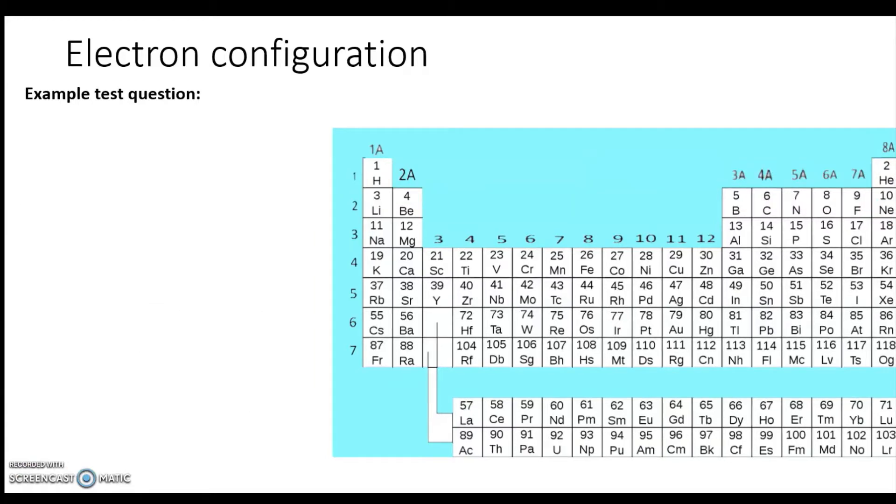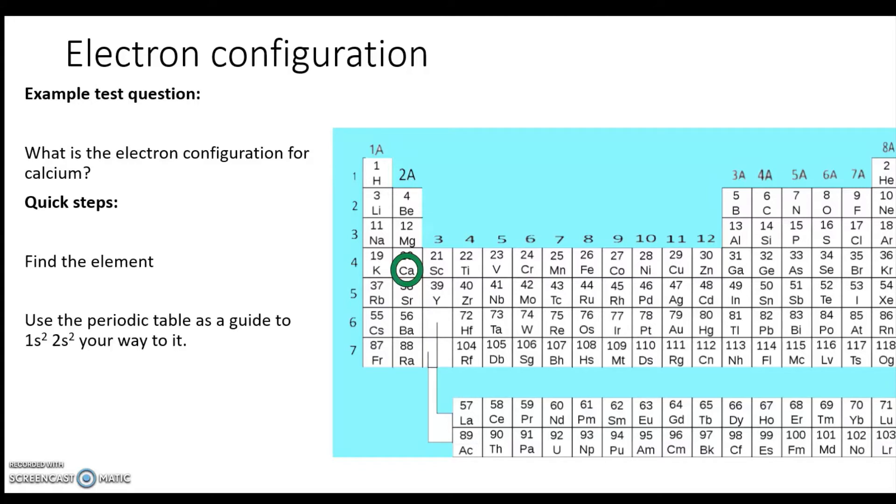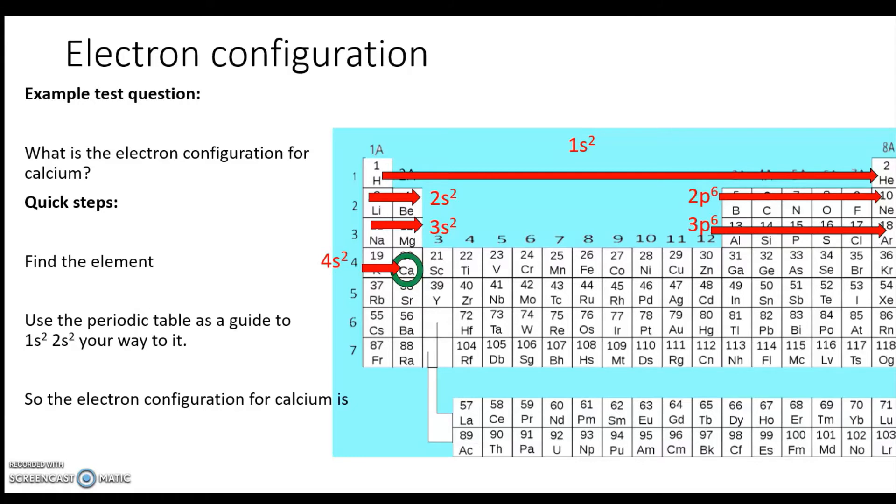Okay, the next one is going to be calcium. What is the electron configuration for calcium? So we use the same steps: find the element, which is a good bit further down. Well, 1s² 2s² our way to it: 1s² 2s² 2p⁶ 3s² 3p⁶ and then 4s².